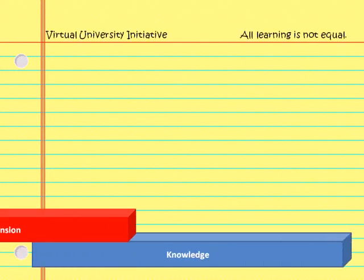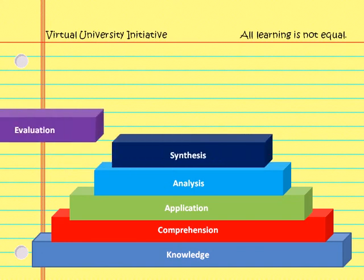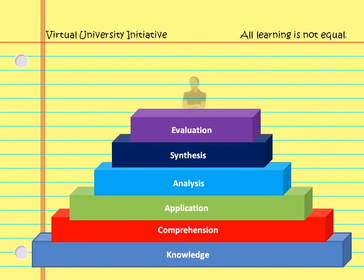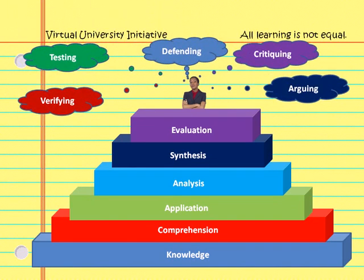At the evaluation level, based upon a mastery of the lower levels, students are equipped with the ability to assess the worth of the material being learned. They are comfortable with challenging assumptions, arguing alternatives, and supporting alternate concepts. Intellectual activities associated with the evaluation level include arguing, critiquing, defending, testing, and verifying.